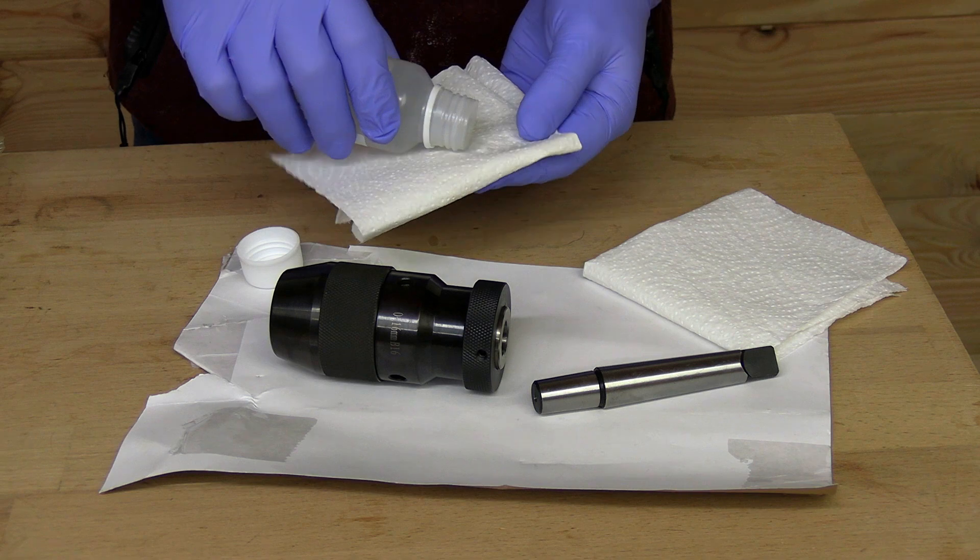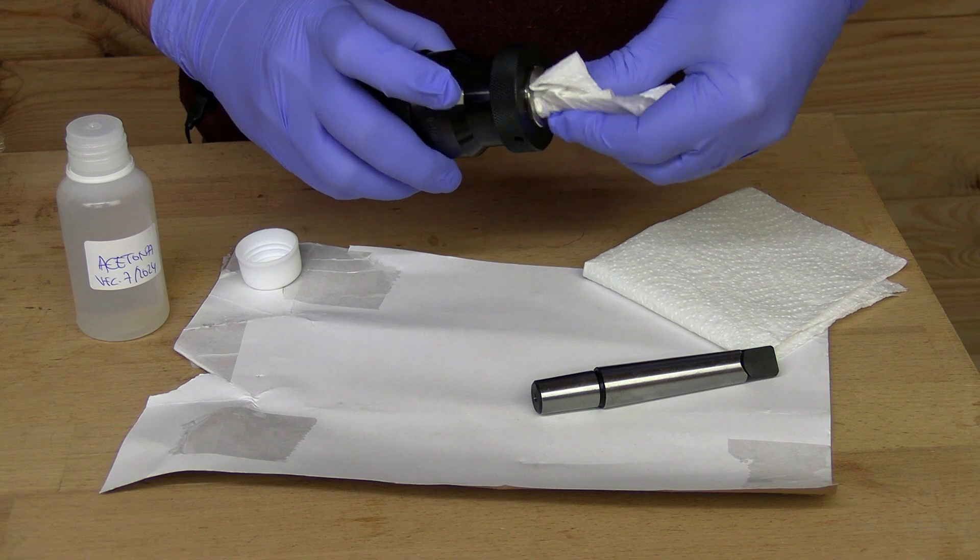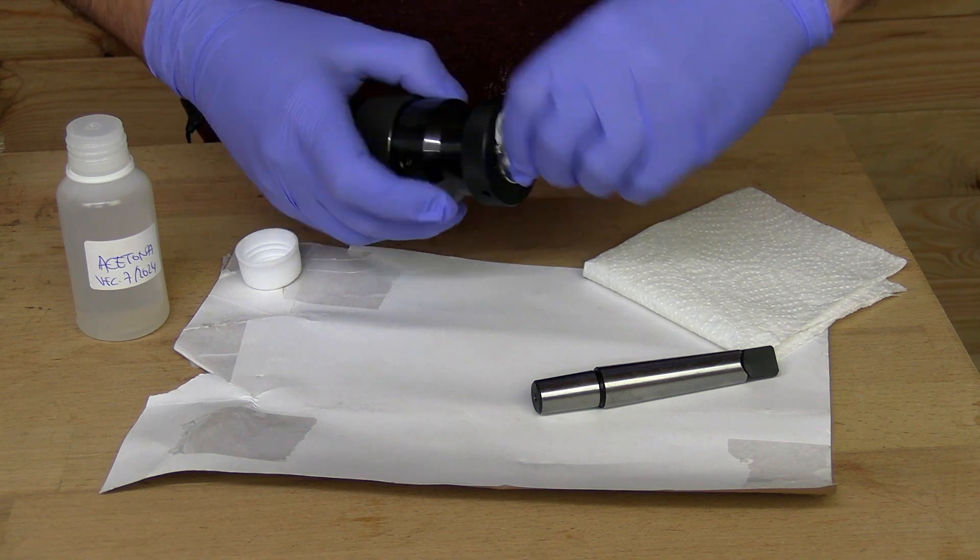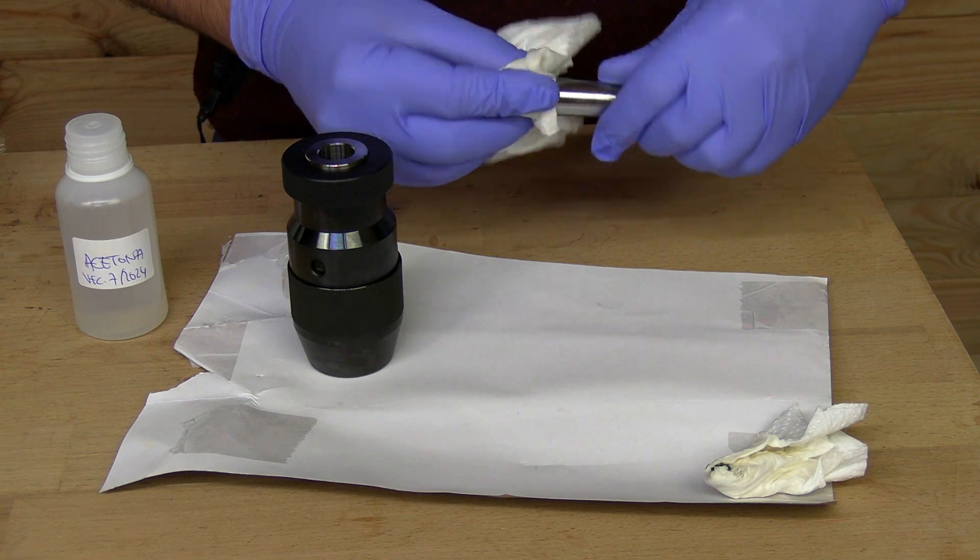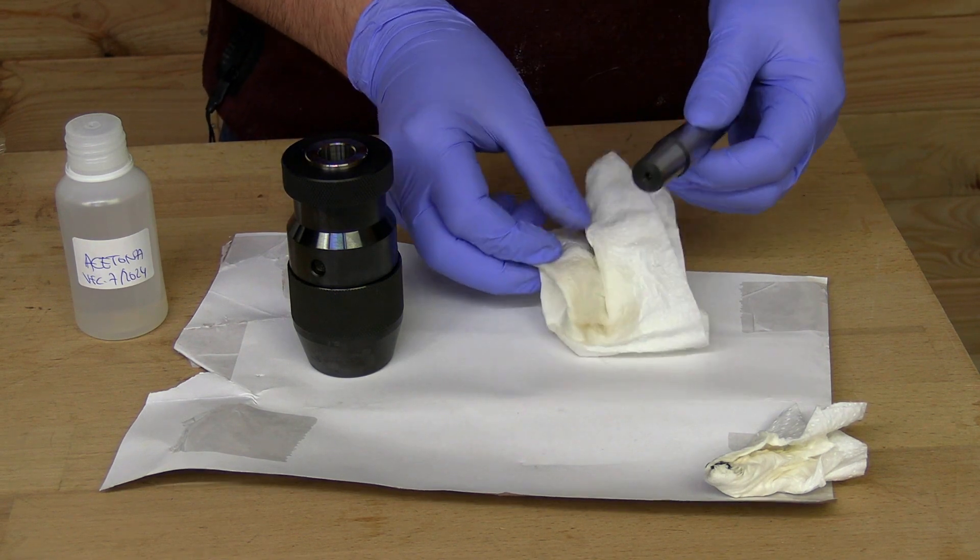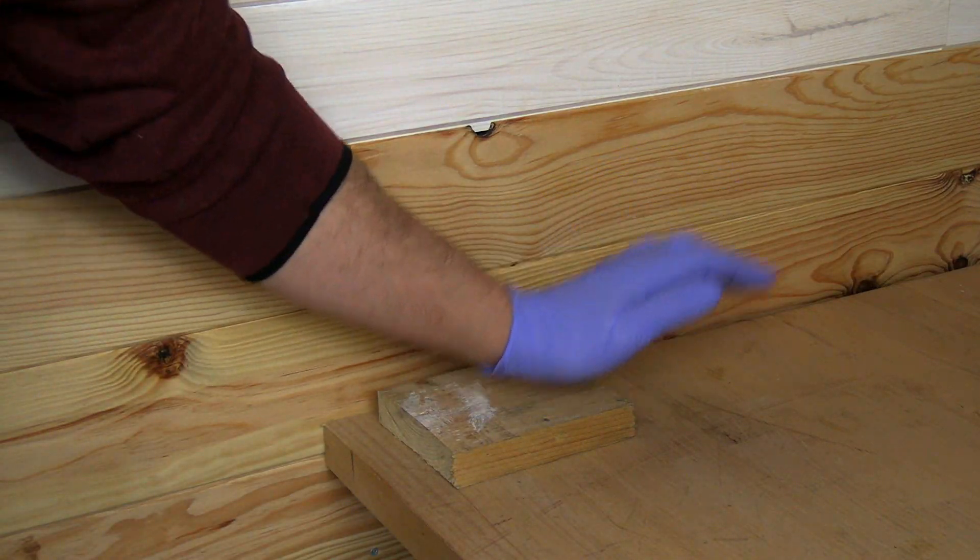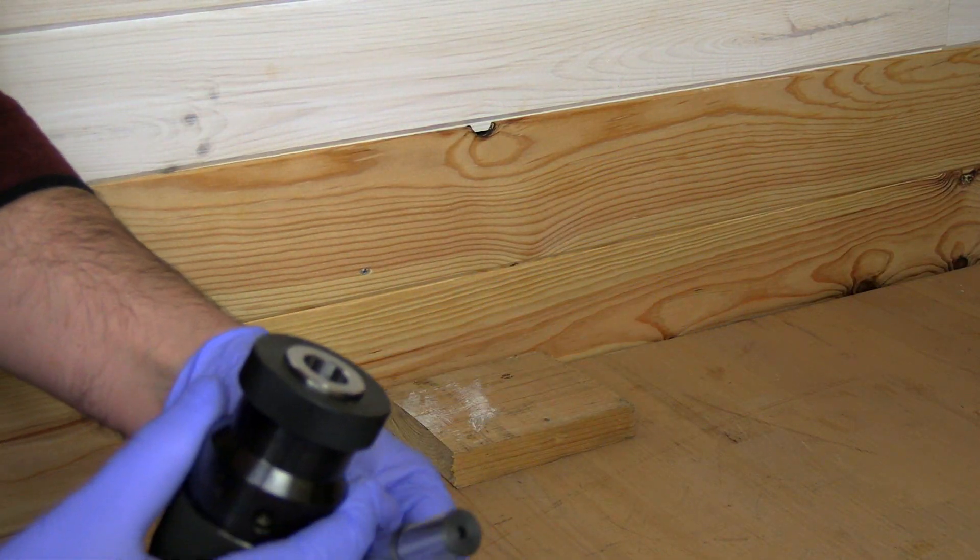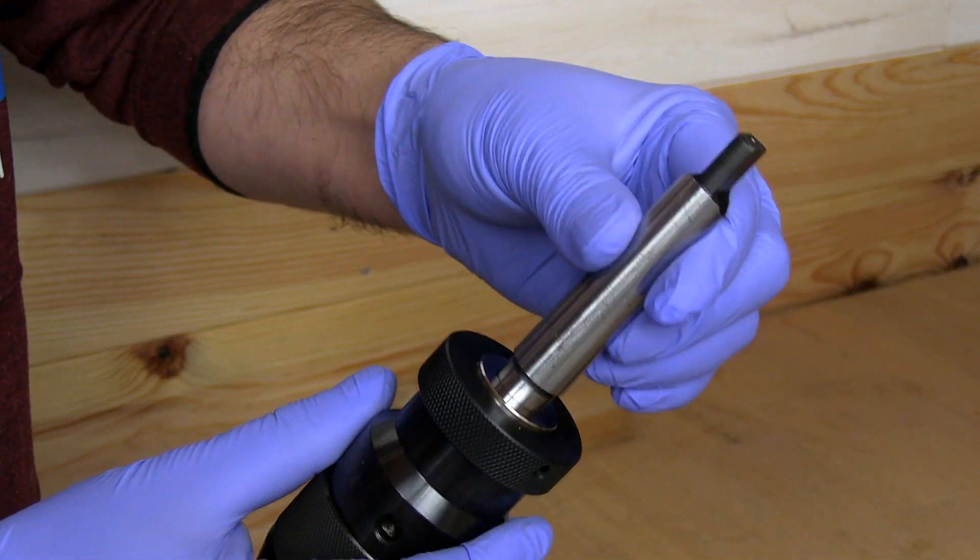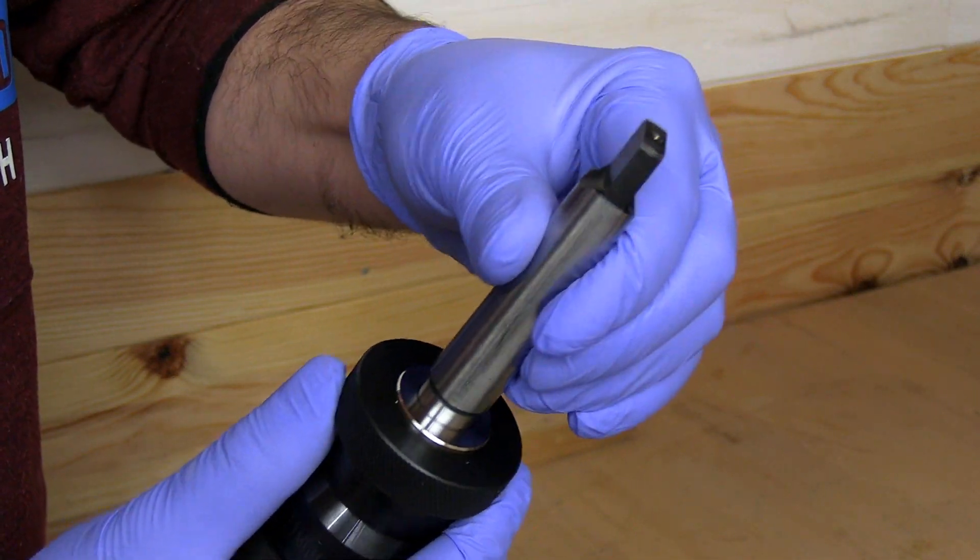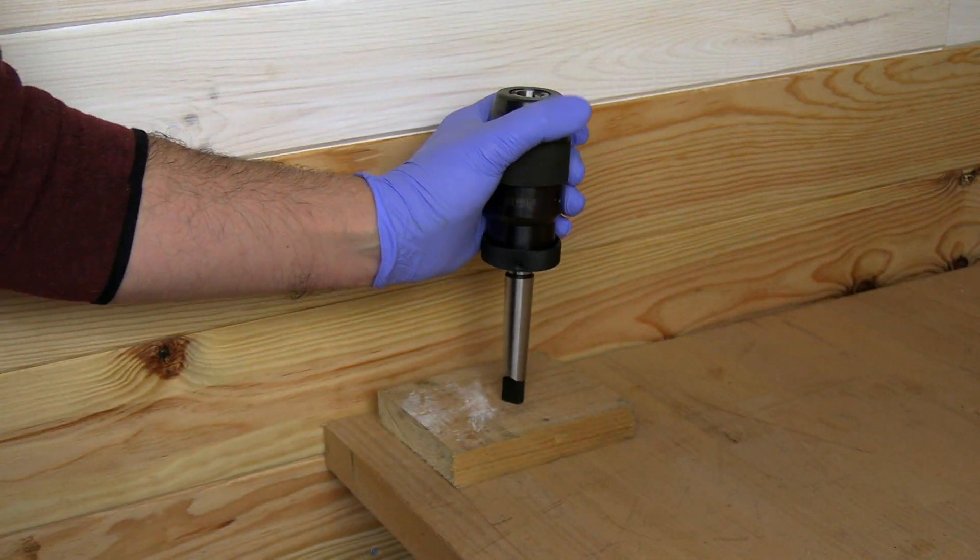And finally, we are going to install the chuck. With acetone, I'm going to clean the morse tapers and the holes where they must fit well. Now I need a solid base. I insert the short side into the chuck, tightening it a bit. And I have to give it a sharp tap.